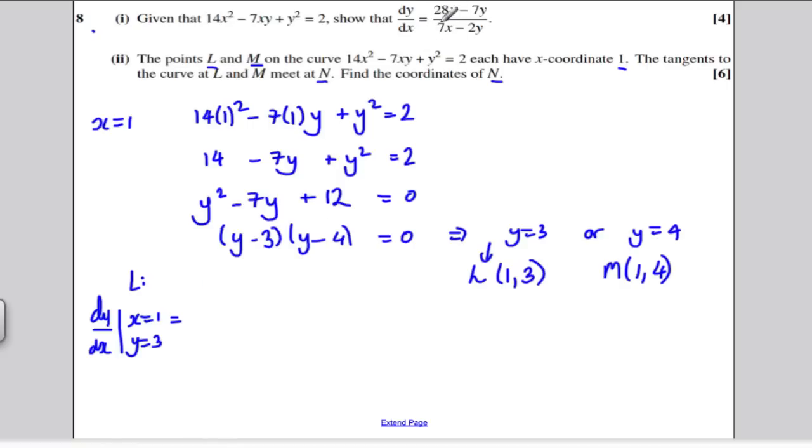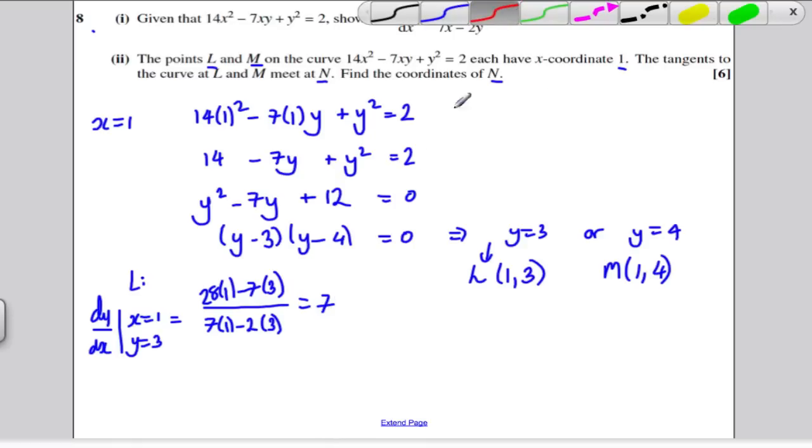minus 7(3), all divided by 7(1) - 2(3). If you work that, 28 - 21 is 7, and 7 - 6 is 1, so this is just the answer 7. I'm just going to take a different colored pen here.